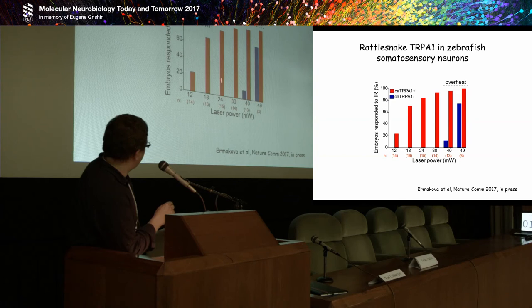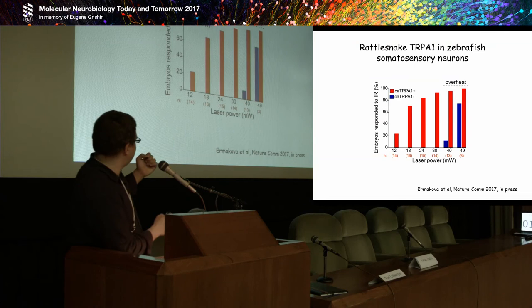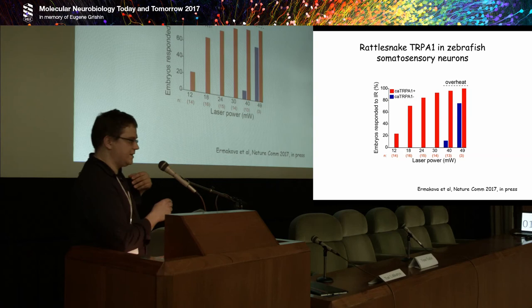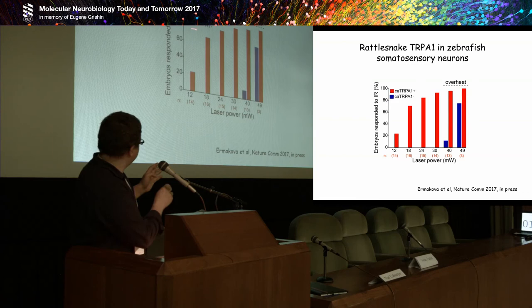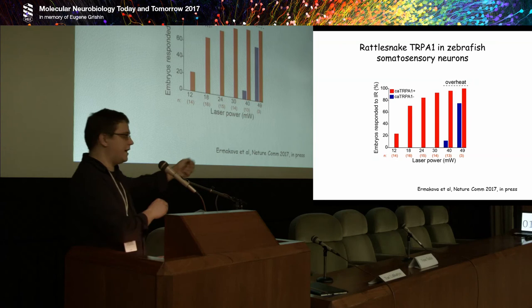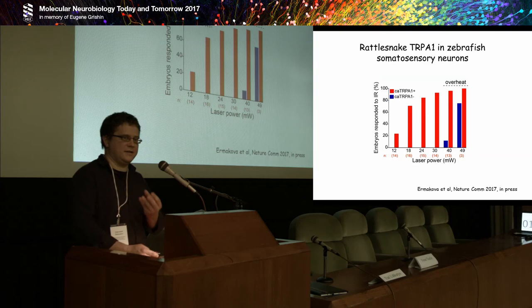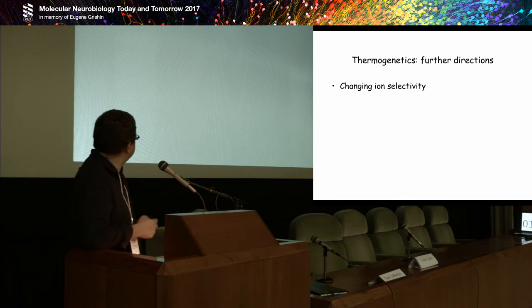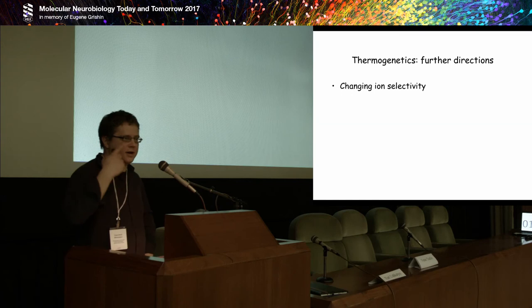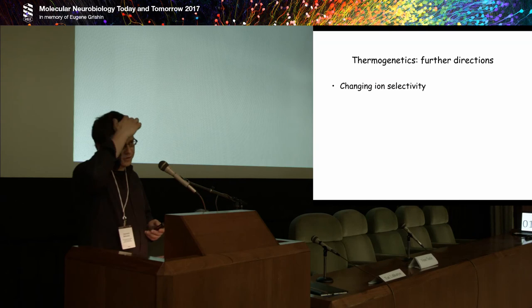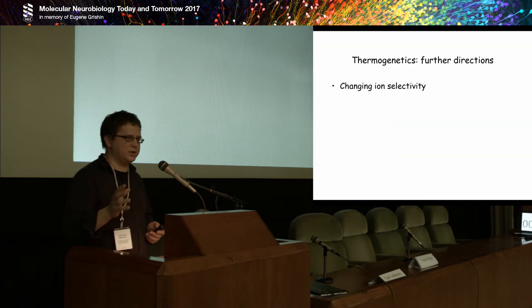Future directions include: changing the ion selectivity of the channels. Currently, TRP channels are non-selective cation channels, so we are engineering versions permeable to chloride, and others permeable only to sodium and potassium but not calcium. We are also searching for TRP channels with different temperature thresholds — for zebrafish we use a channel that opens at 28°C, but for mice we need a channel that opens at around 39°C.